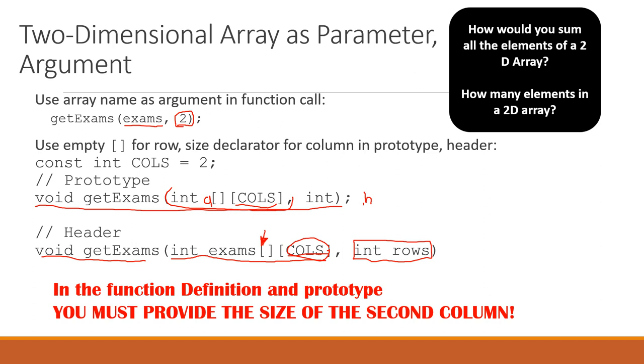How would you sum all the elements of a two-dimensional array? Well, you would just do a nested loop with a sum variable. You would just go through all the elements in the array using both loops, and every time you visited an element you would add it to the sum and repeat it at the end.